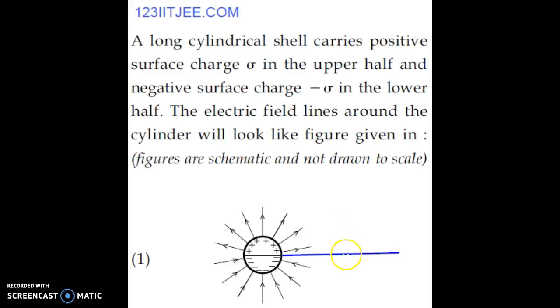Let us place a positive point test charge here. Due to repulsion by these positive charges, the field here due to the upper half would be somewhat like this.